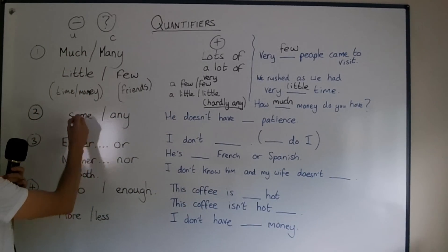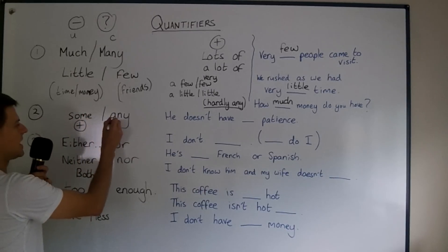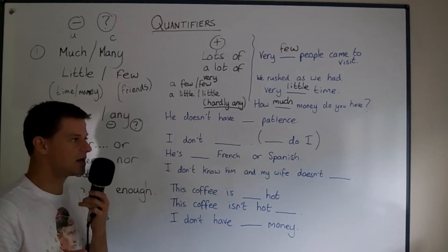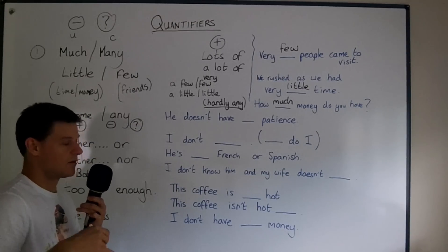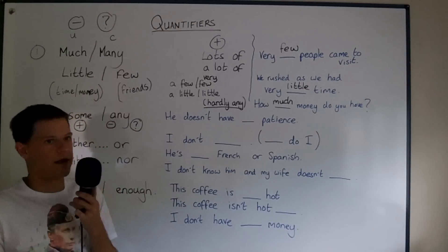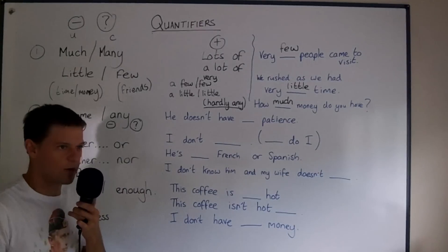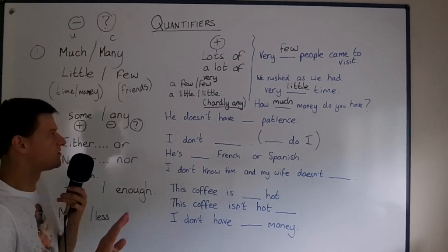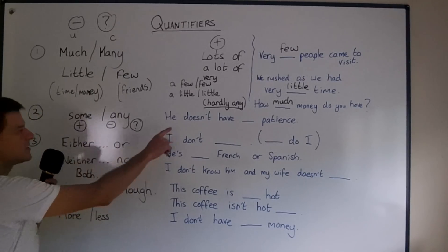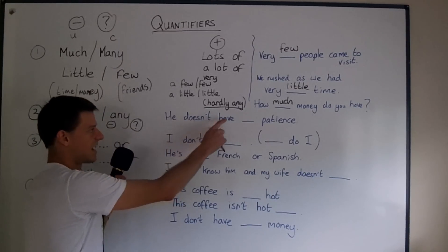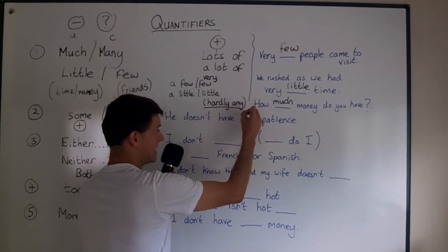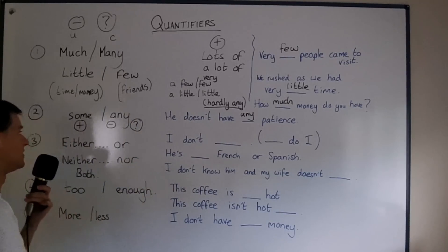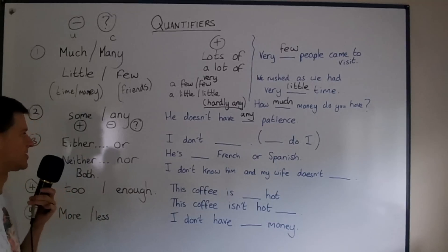Secondly, some or any. We use 'some' usually in positive sentences and 'any' in negatives and questions. We can use 'any' in a positive sentence — 'Where do you want to go?' 'Anywhere, I don't mind.' We say 'anywhere' because 'any' means it doesn't matter which one. For a negative sentence like 'He doesn't have any patience,' we need 'any.' We can use 'any' with countable or uncountable, and the same applies to 'some.'